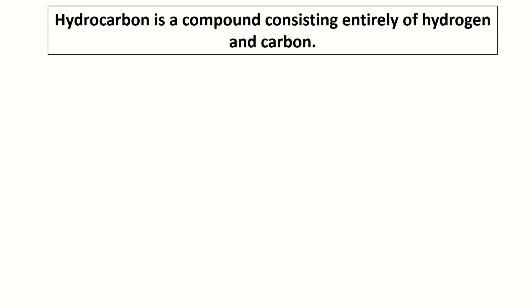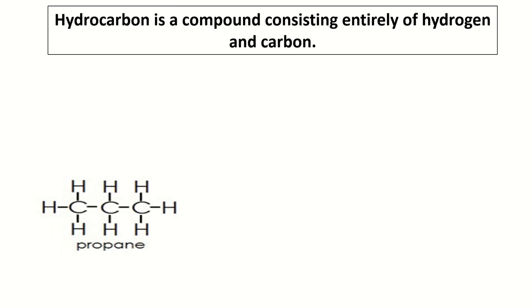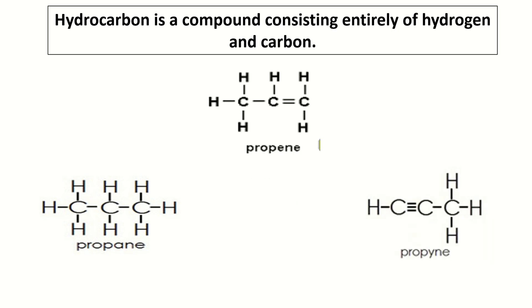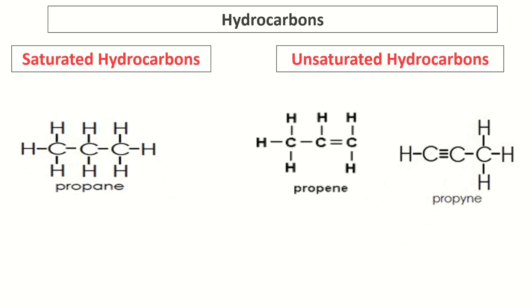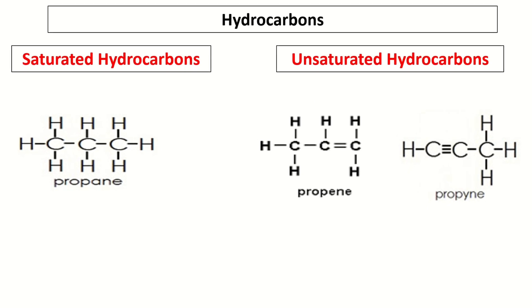This is part 3 of our video lesson about hydrocarbons. Hydrocarbons have two types: saturated hydrocarbons and unsaturated hydrocarbons.